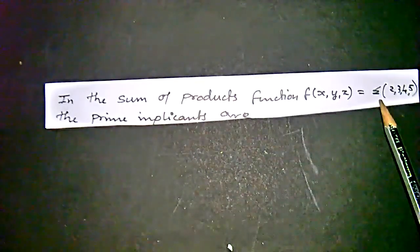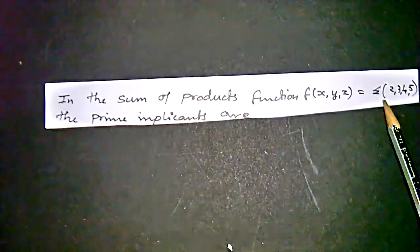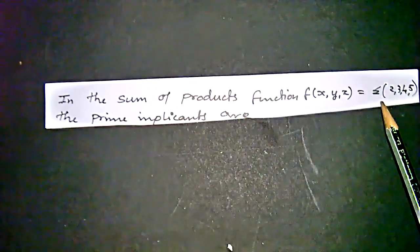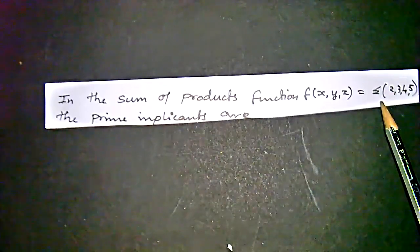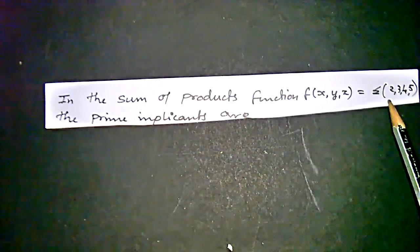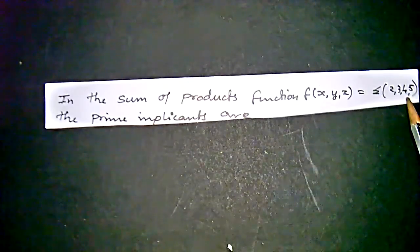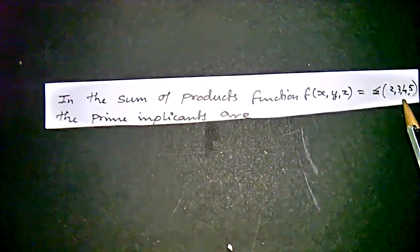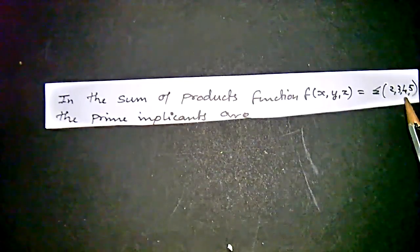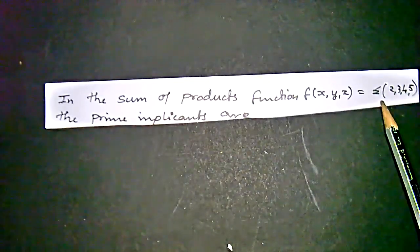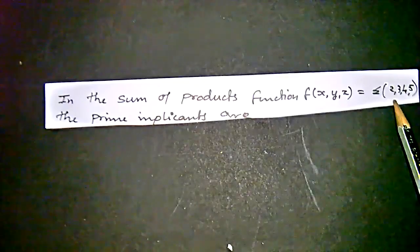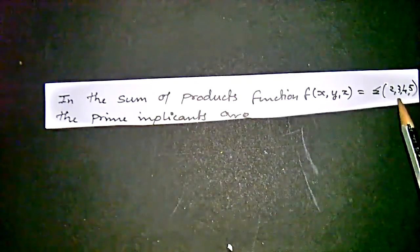Here we have summation. We should be aware of product function also because if we have summation function 2, 3, 7, 4, 5, we have the number of 1s in the truth table. If we have multiplication, that is pi, we will get the values 0, and the rest will be 1.